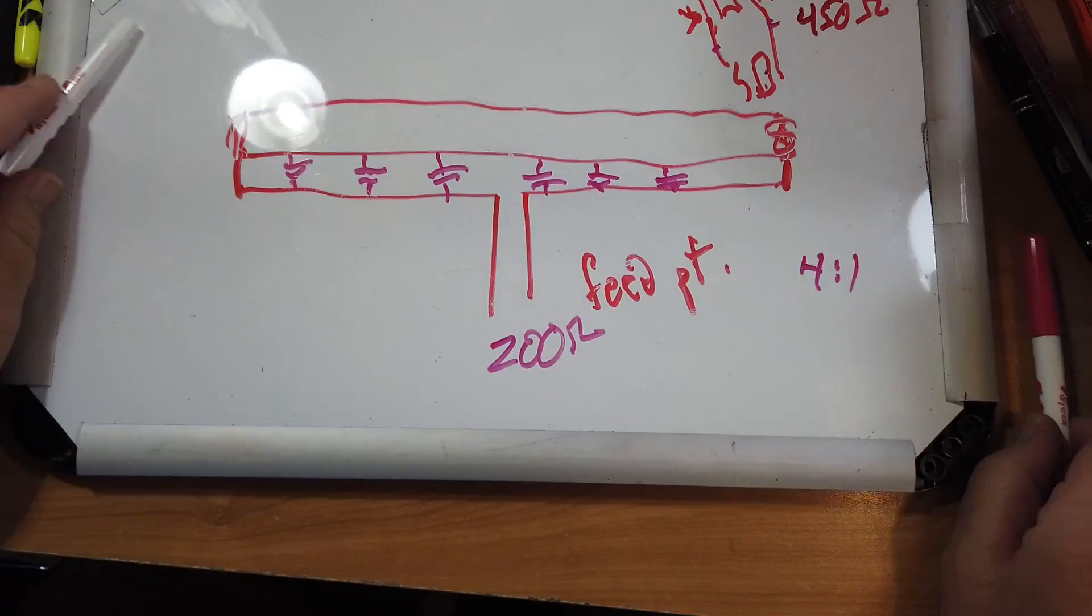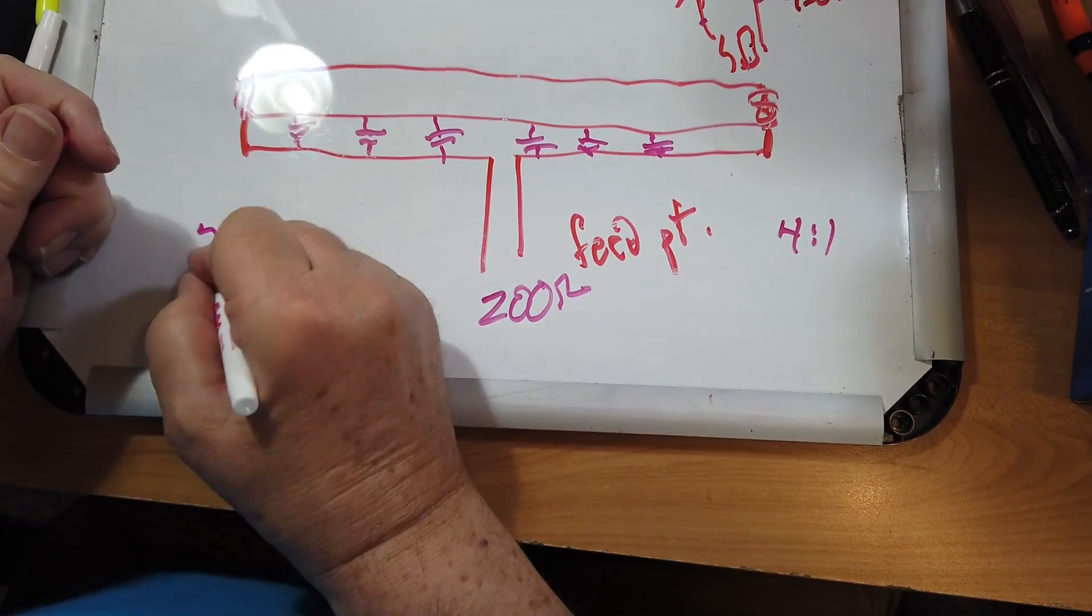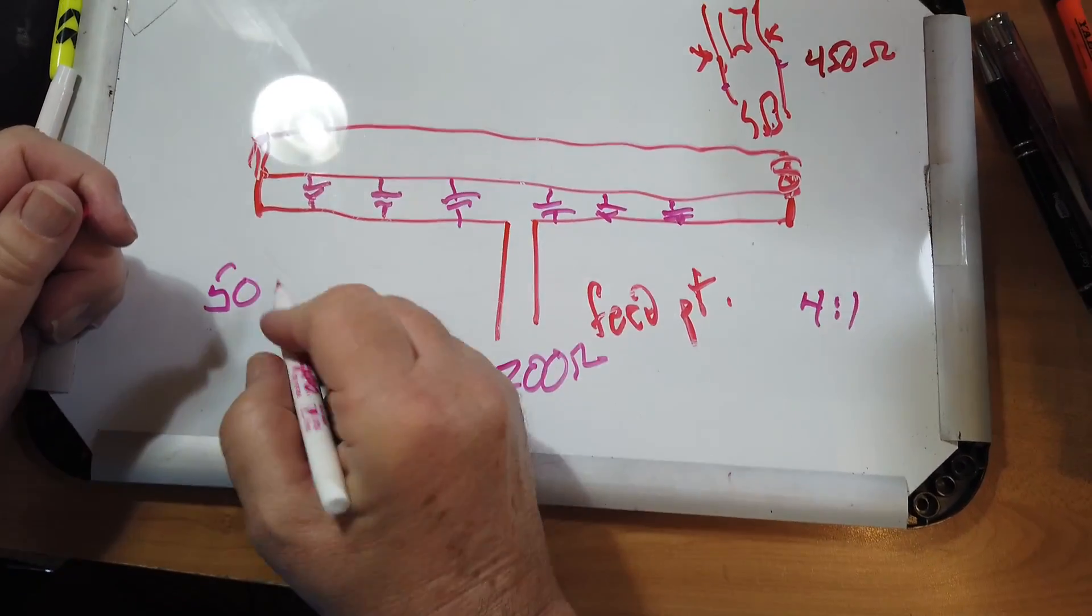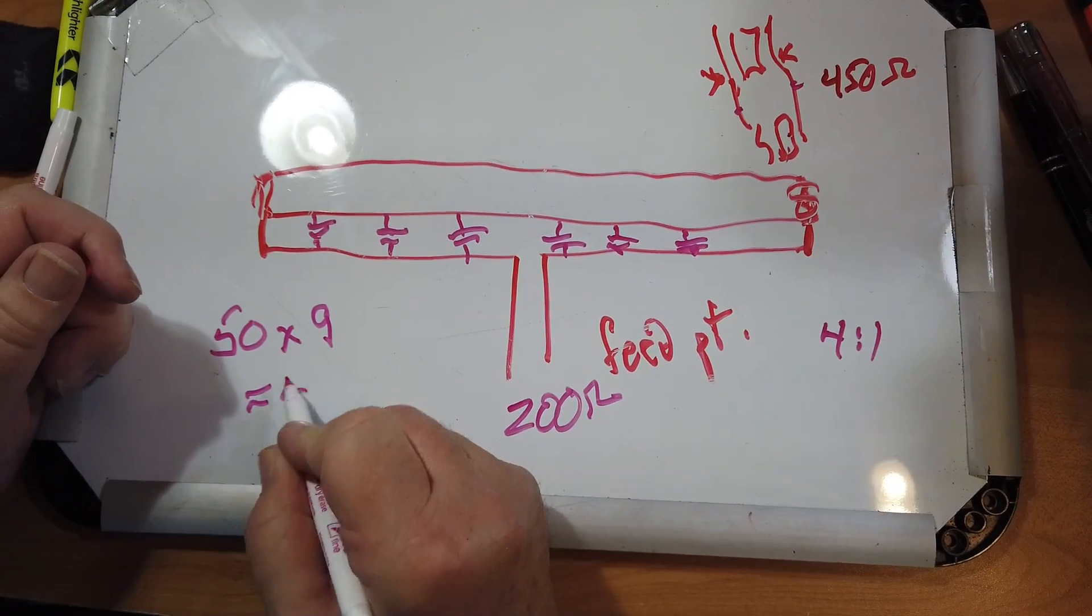So, you multiply the standard impedance here, which is 50 ohms, by three squared, which is nine, gives you 450.